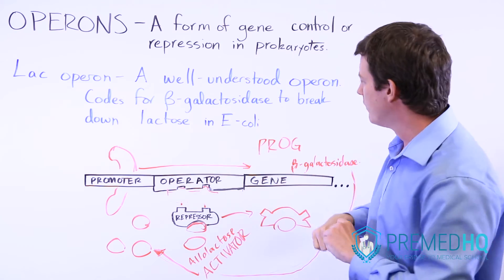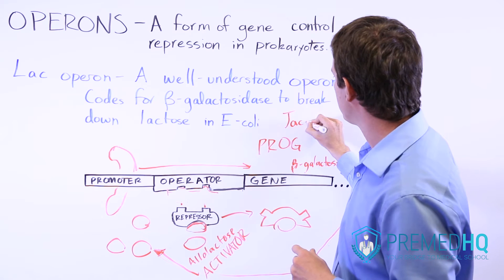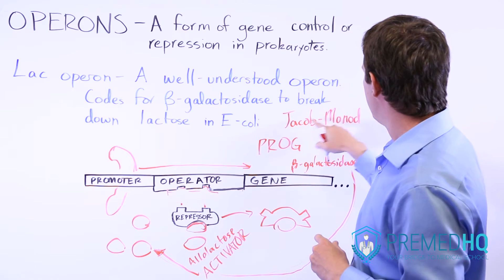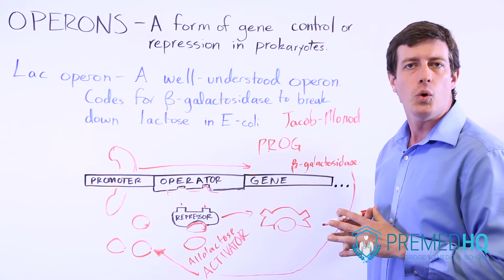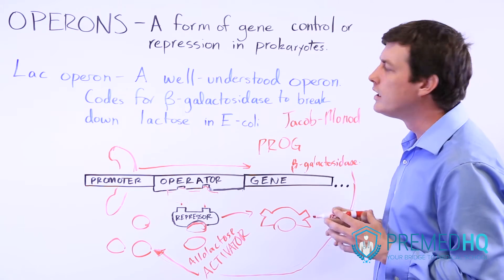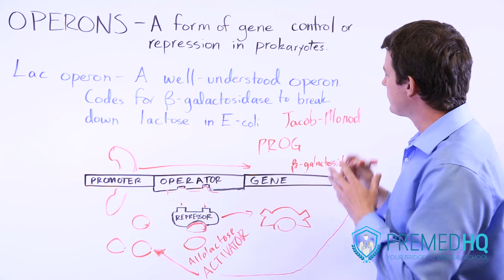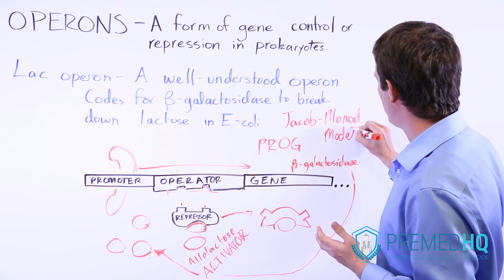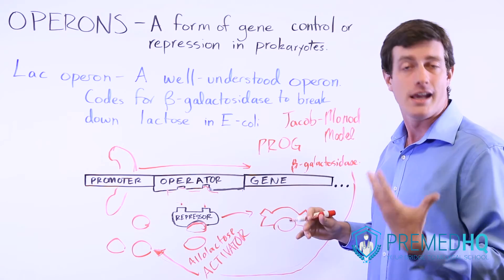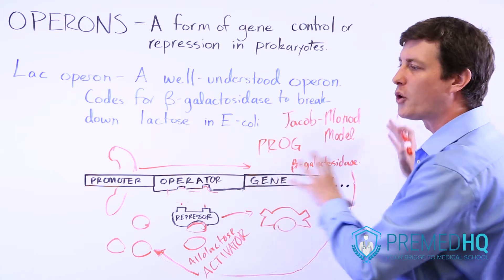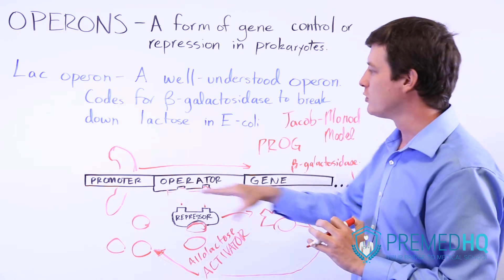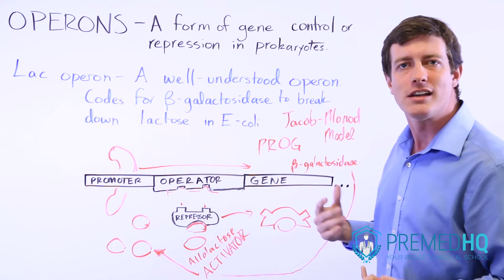Another name for this is the Jacob-Monod model. Jacob and Monod — M-O-N-O-D — were two French scientists who discovered this. The Jacob-Monod model of gene control is at a level of understanding where it can be tested, and it helps you understand how the whole environment interacts so that we can control a gene and maintain homeostasis.